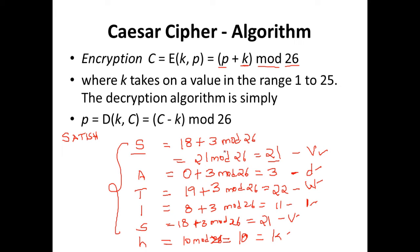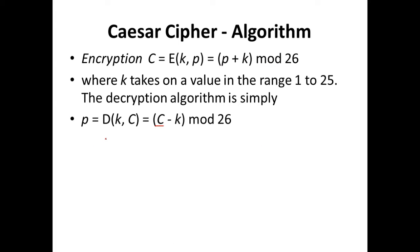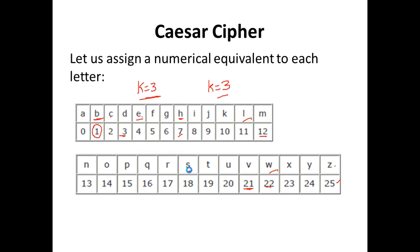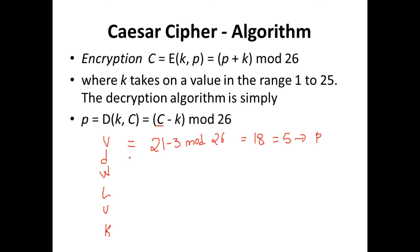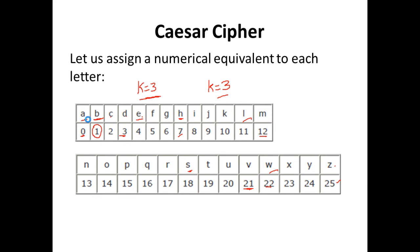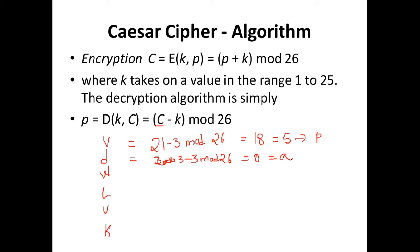Now let us look at decryption. The ciphertext is V-D-W-L-V-K. For V: its value is 21, so (21 − 3) mod 26 = 18, and 18 corresponds to S — that's our plain text. For D: the value is 3, so (3 − 3) mod 26 = 0, which corresponds to A. Continuing this decryption process for all characters, you get back the plain text: SATISH.